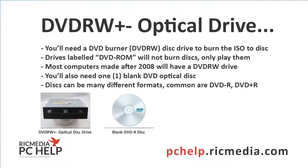Now before we start, obviously you're going to need a DVD burner. Just some clarification: if your drive is labelled DVD-RW — probably with a plus or minus on that as well — then that is a DVD burner. But if it's labelled DVD-ROM, it will only play DVDs. So if you've got a DVD image that needs to be burnt, you won't be able to do it with a DVD-ROM; you'll need a DVD-RW drive.